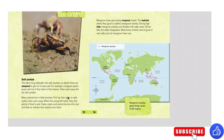Salt pumps: the tides bring salt water into salt marshes, so plants there are adapted to get rid of extra salt. For example, cord grass plants pump salt out of tiny holes in their leaves, and tides wash away the dry salt crystals. Many animals live in tidal marshes. Fish lay their eggs in calm waters, then swim away. When the young fish hatch, they find plenty of food to eat. Crabs, snails, and worms burrow into mud and feed on detritus that washes over them.